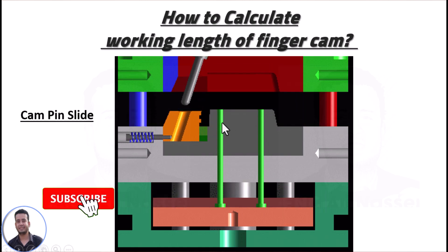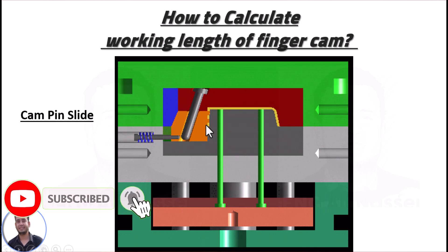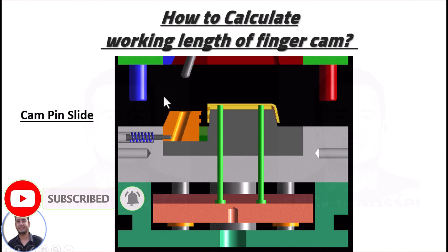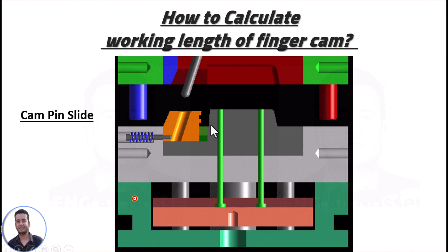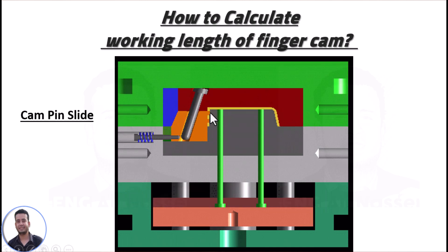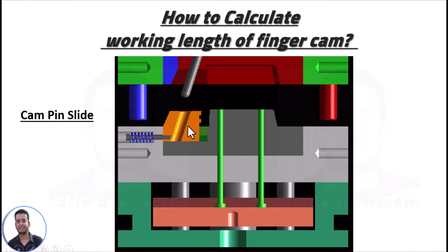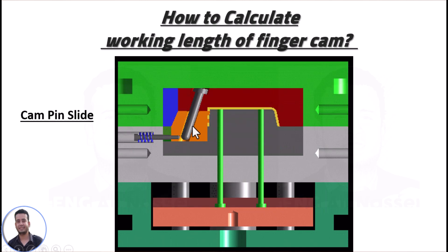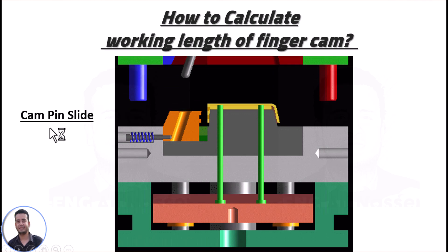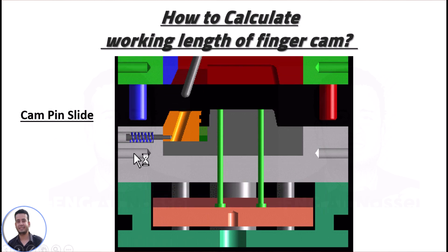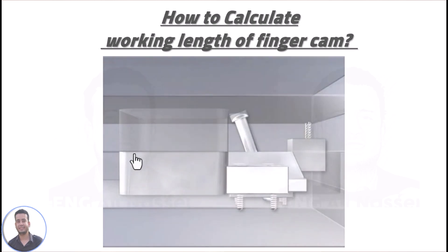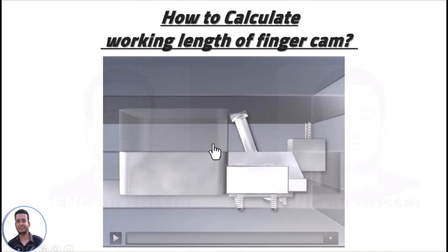which allows for production of parts with external undercut. As you can see in this animation, this part has external undercut and you can machine it with this mechanism called cam bin slide. Let's discuss more about cam bin slide before we calculate working lengths.